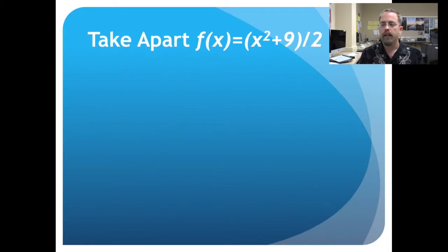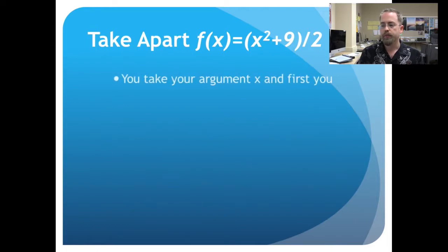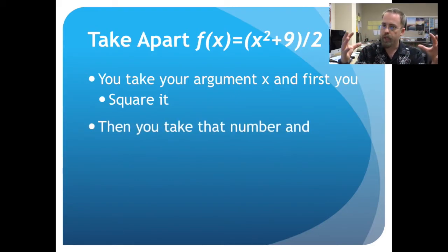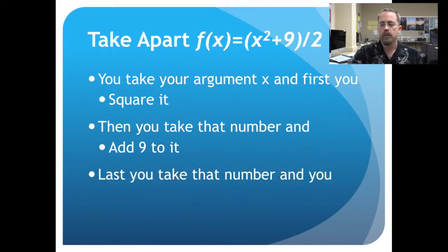Now, let's try taking apart f(x) equals x squared plus 9 all over 2. What's the first thing that happens? You take some input x and the first thing you do is square it. That's the x squared part. Then what do you do? You take whatever number you've gotten from squaring and you add 9 to it. And now you've got the numerator, and you take that numerator and divide it by 2.